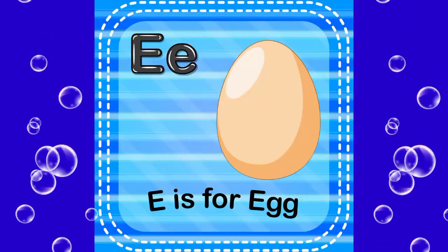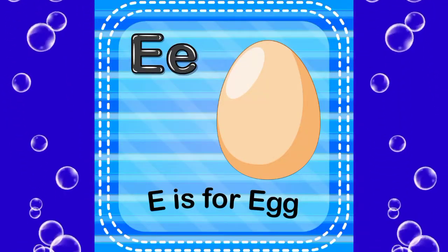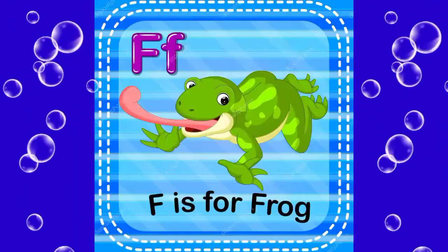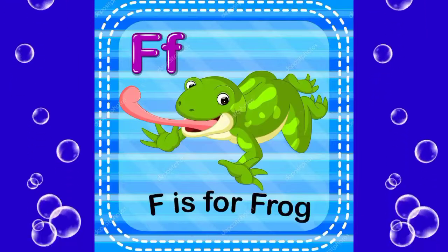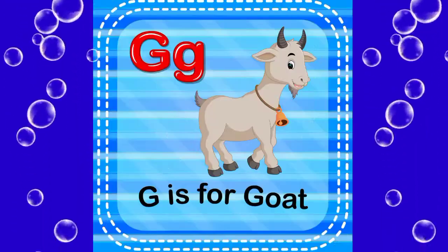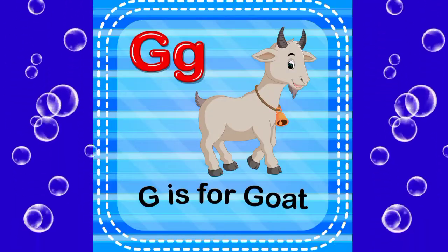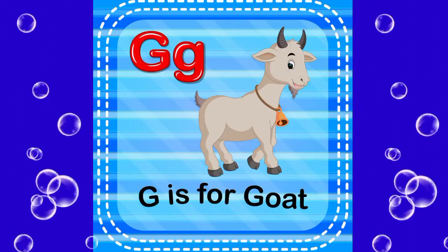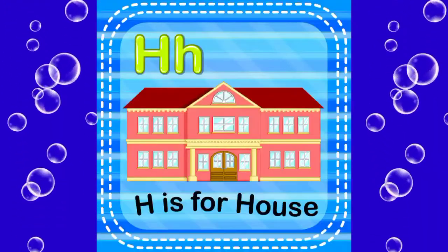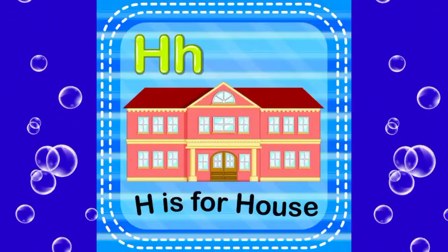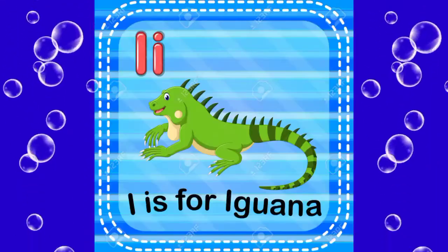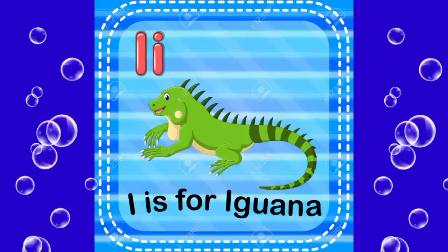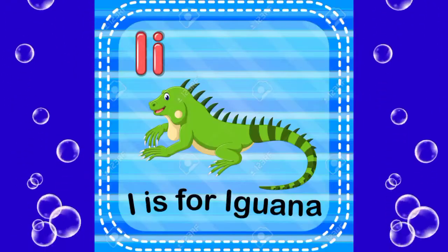E is for egg, F is for frog, D is for goat, S is for house,